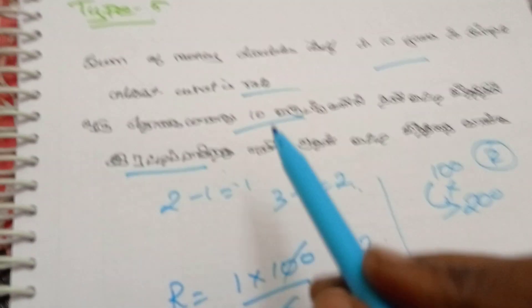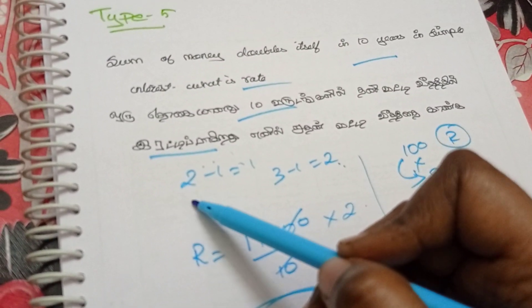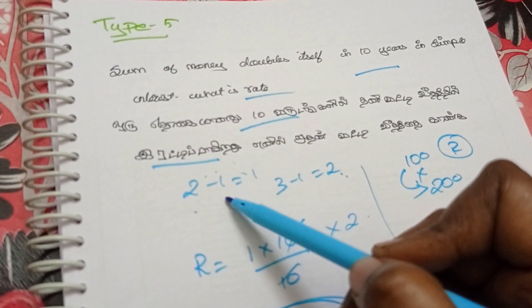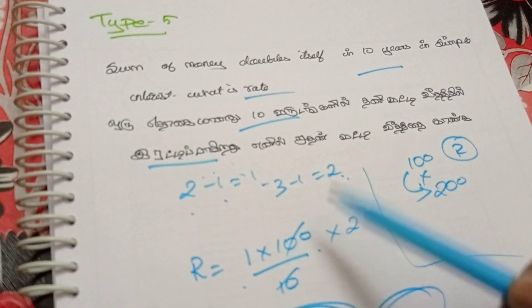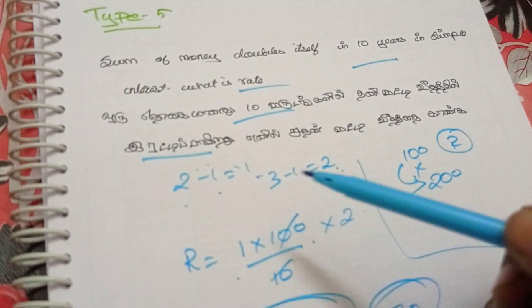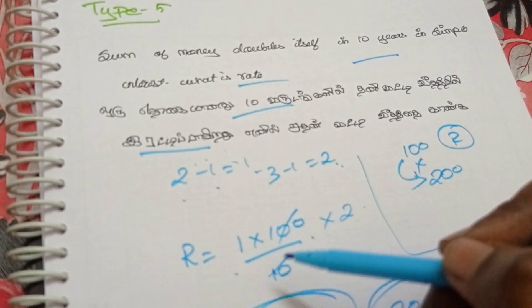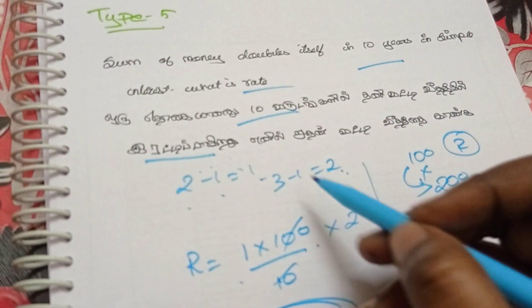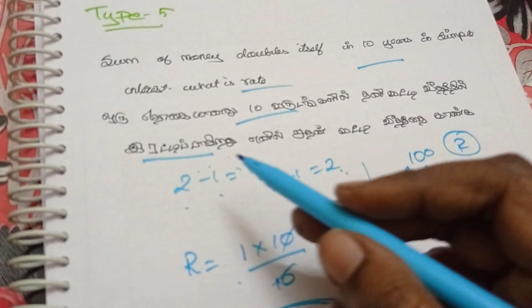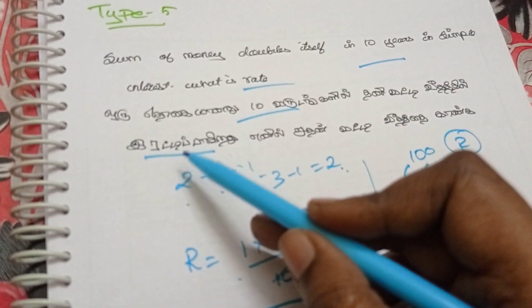Here the sum doubles itself. You can choose the sum doubling 2 times. The formula will be a shortcut for when the sum doubles multiple times instead of working it out fully.